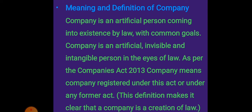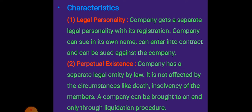The company is an artificial person created by law and must be registered under the Companies Act 1956 or Companies Act 2013. Only upon registration does the company get existence as an artificial person by law. By definition, the company is a legal personality and it has perpetual existence. As it is artificial, there are no circumstances of death or insolvency of members, because the company has separate existence from its members and can only be brought to an end during liquidation.